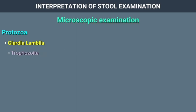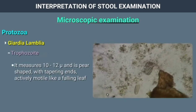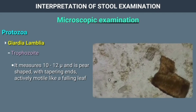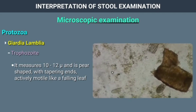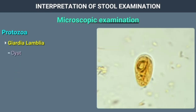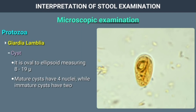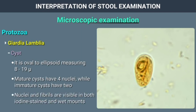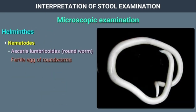Giardia lamblia trophozoite measures 10 to 12 microns. It is pear-shaped with tapering ends, actively motile like a falling leaf, and has 2 centrally placed nuclei and uniform granular cytoplasm. The cyst of Giardia lamblia is oval to ellipsoid in shape, measuring 8 to 19 microns. Mature cysts have 4 nuclei while immature cysts have 2. Nuclei and fibrils are visible in both iodine-stained and wet mounts.